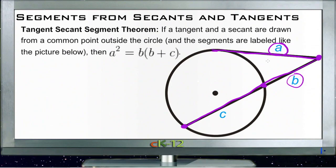So if we have, say, for instance, a 5-unit length for segment A here from our tangent point out to the vertex, and say 4 units for B, then we can calculate the length of C by squaring A. So we do 5 squared, and setting that equal to 4 times 4 plus C.